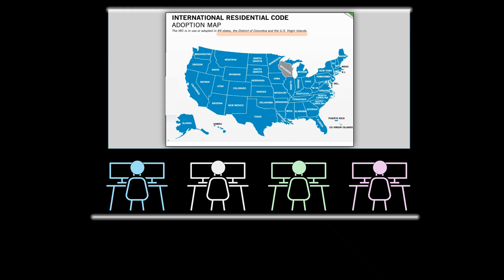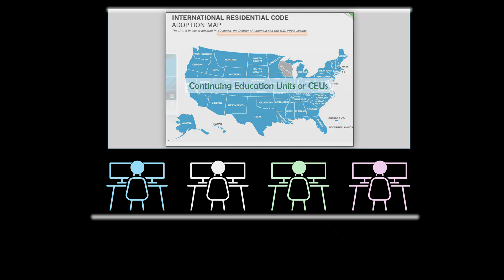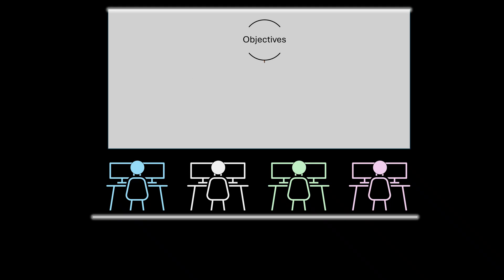Nearly all states in the United States have adopted the International Residential Code by the International Code Council. This module and all the other modules in this series may be used to provide continuing education units, or CEUs, required by the International Code Council as well as various professional organizations and government agencies. The development of this course was guided by the assumption that the primary reason you are considering taking this course is to acquire the ability to complete the structural design of residential buildings and put together a complete set of structural drawings for permit issuance and construction.